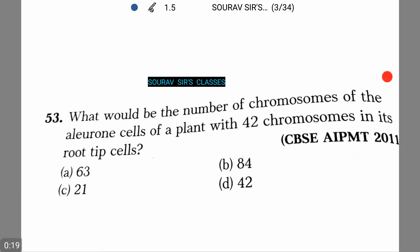What's the number of chromosomes of the aleurone cells of a plant with 42 chromosomes in its root-tip cells? These are the following given options. Let us see what the answer will be.